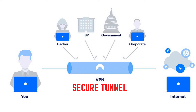A VPN works by routing you through an encrypted connection called a secure tunnel. Your network administrator can see that you're connecting to an outside server — the VPN's — but not what websites you're connected to. This part of the process works like a charm, as tunnels generally use end-to-end encryption.